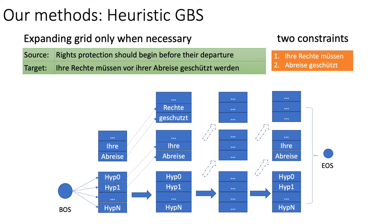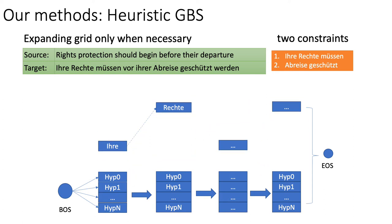Now I will introduce our Heuristic Grid Beam Search method. This diagram shows the principle of Grid Beam Search — we can see the grid of the beam units. In our HGBS method, we want to only grow the grid at the right step with the right constraints, so as to avoid invalid and meaningless beams and hypotheses. The ideal state is that there are only limited beams in each column of the grid, with other unnecessary beam units filtered using some guidance.